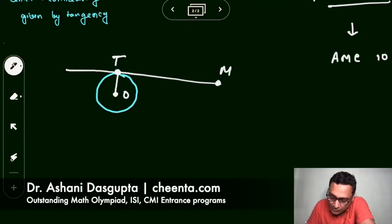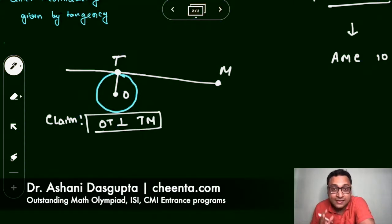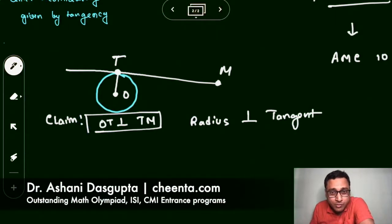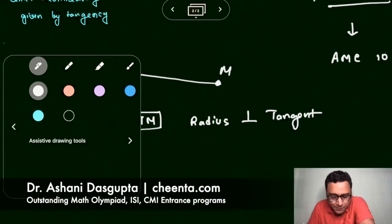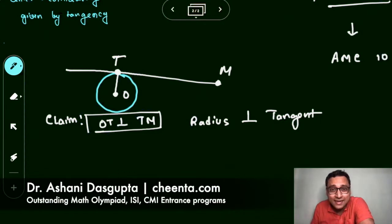Now let us join the segment OT, that is the center and the point of tangency, and this is the claim: OT is perpendicular to TM. This radius is perpendicular to tangent. Many of you know this as a fact from geometry. I always prefer a little bit of proof. Why is the tangent perpendicular to the radius at the point of tangency? Let's take a point outside the tangency point which is T1. We will show that OT1 is not perpendicular to the tangent, thereby indirectly showing that OT is perpendicular.